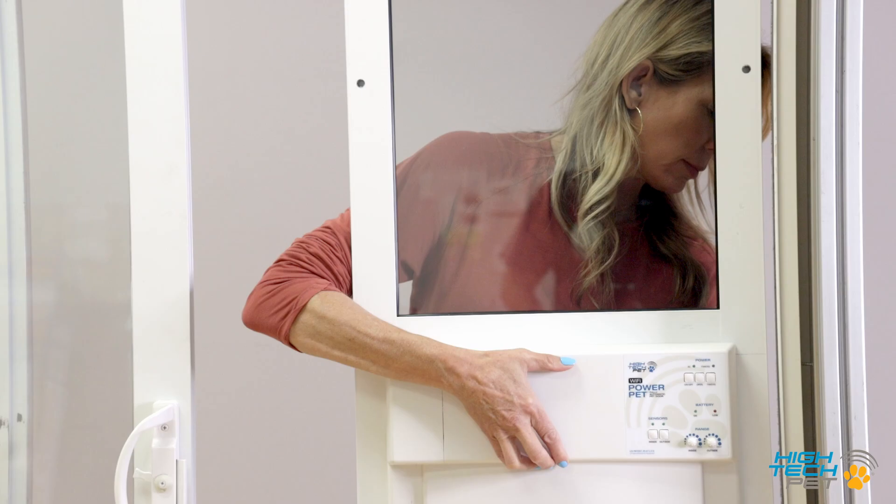Insert the lock knob into the pre-installed lock assembly on the slider insert. Using the provided hex key tighten the set screw of the lock knob. The lock knob is now firmly attached to the lock assembly.